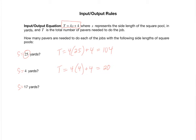What if I had a pool of side length 17 yards? Well, then the number of pavers T would equal 4 times, in place of s, I've got 17, and then plus 4. 4 times 17 is 68, 68 plus 4 is 72. So if I had a pool of side length 17 yards, that's a square pool of course, then the total number of pavers needed to do the job is 72.